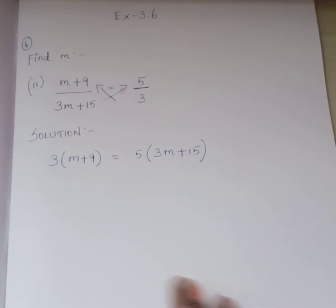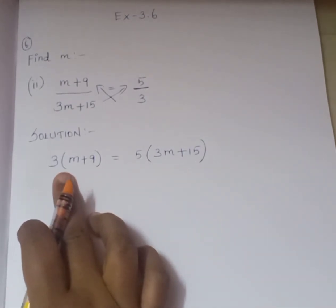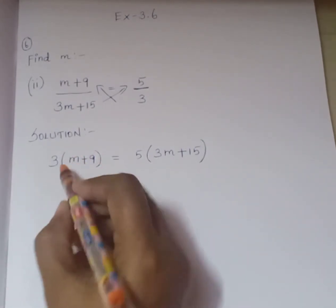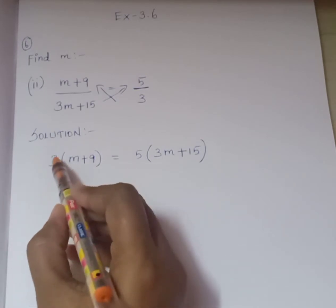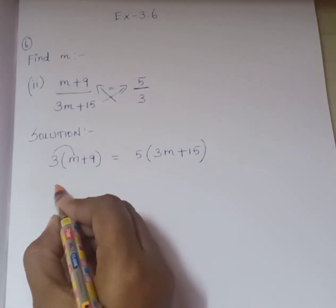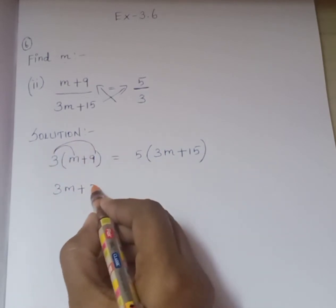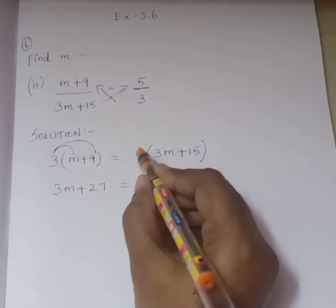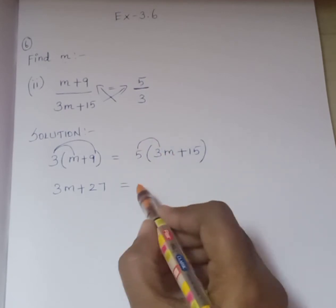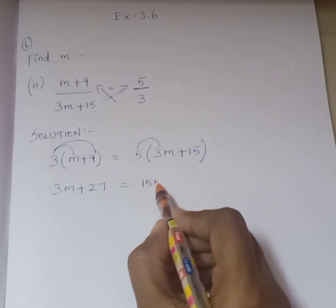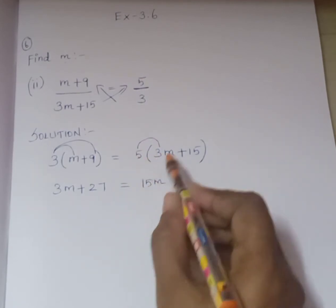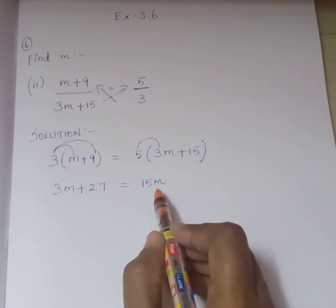So 3 times (m+9) is equal to 5 times (3m+15). Here, what is the meaning of the bracket? We know it is multiplication. Yes. So I am going to multiply this term. 3 times m is 3m plus 3 times 9 is 27, is equal to 5 times 3 is 15m.